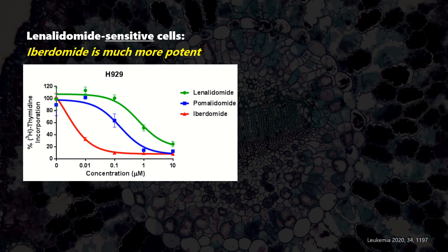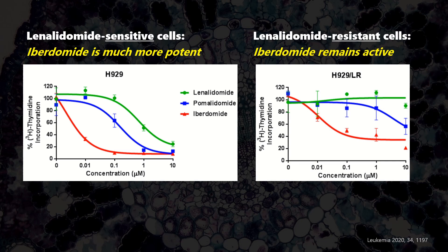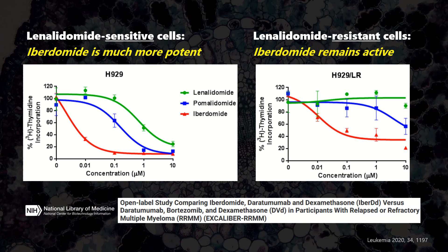In normal cells, iberdomide is much more potent — compare the red and green curves. But more importantly, this analogue retains activity in cells that are resistant to lenalidomide. Due to this higher penetration, the hope is that the drug will prove more efficacious in resistant cases. It is currently in phase 3 trials, with the idea of combining it with other medications to stack up their effects.